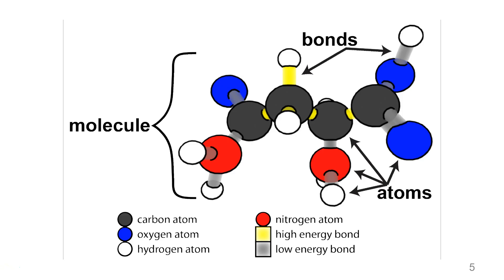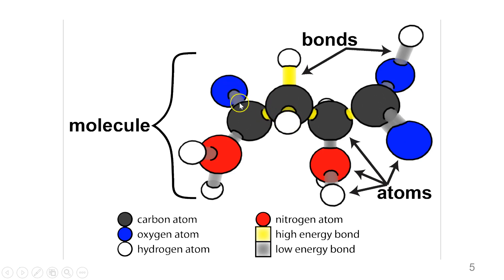Before we move on, a quick reminder: we've been working with this model of a molecule — a molecule made up of atoms represented here in red, black, blue, and white, connected by chemical bonds. Some of those are low-energy bonds; some of them in yellow are high-energy bonds. Remember that atoms last forever, but molecules can be rearranged.